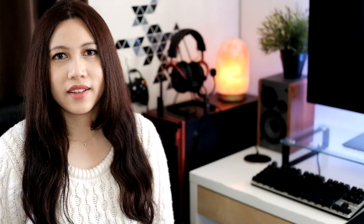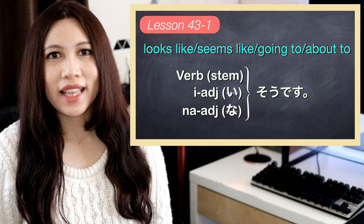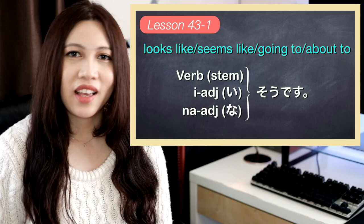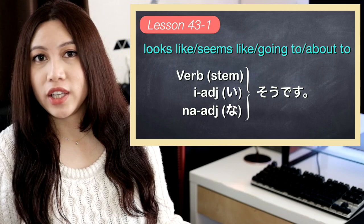Here are the grammar points for today's lesson. Our first grammar pattern is nani nani so desu. We attach this to verbs and adjectives. For verbs, we get the stem of the verb — remove the mas — and then add so desu. For i-adjectives, we remove i, and for na-adjectives, we remove na. This pattern means 'looks like,' 'seems like,' 'going to,' or 'about to.'